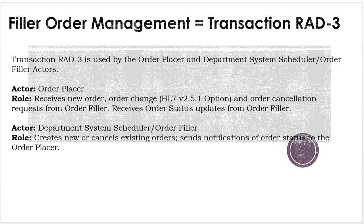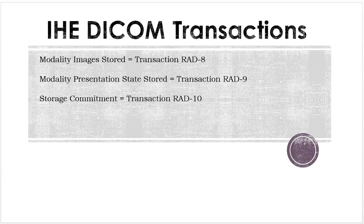Filler order management, transaction RAD-3, is used by the order placer and department system scheduler order filler actors. The order placer receives new orders, order changes — which is an HL7 2.5 option — and order cancellation requests from the order filler, and receives order status updates. The department system scheduler order filler creates new or cancels existing orders and sends notifications of order status to the order placer. This means the RIS system can edit, change, and modify orders as needed. For example, if somebody orders the left hand but the patient's right hand has the cast on it, you can change it to the right to match the study you're actually going to perform.